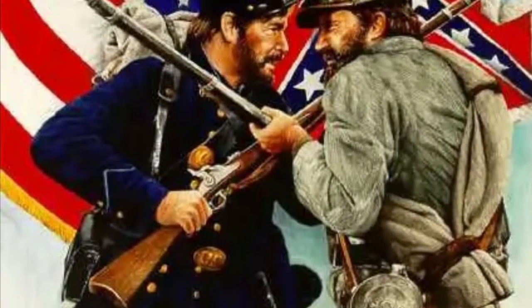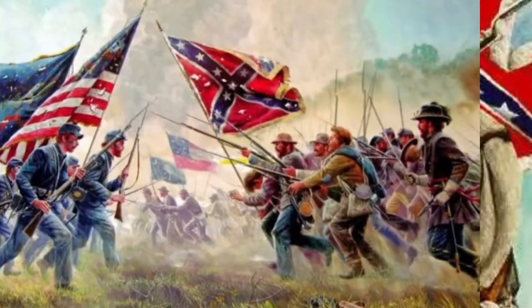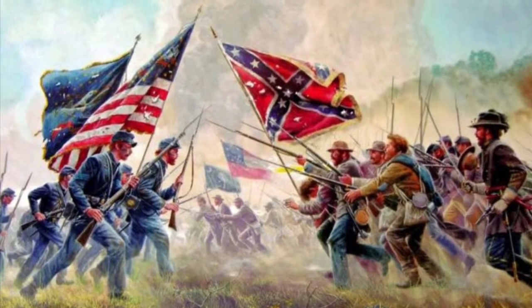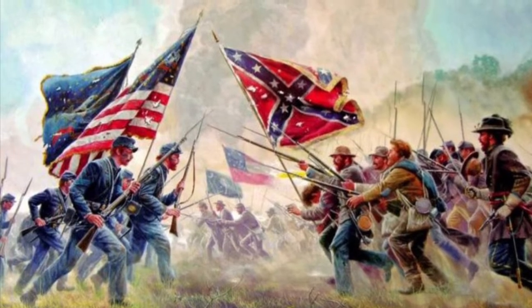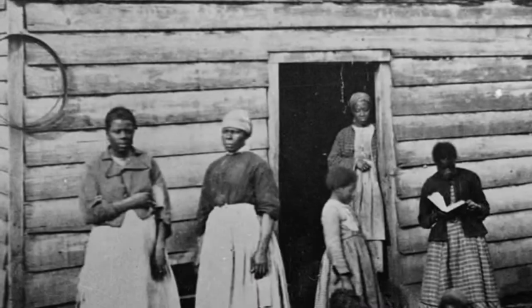The Civil War started in April of 1861 and lasted until April of 1865, killing over 600,000 people. This started with the South seceding from the North to protect their state's rights and views on slavery.